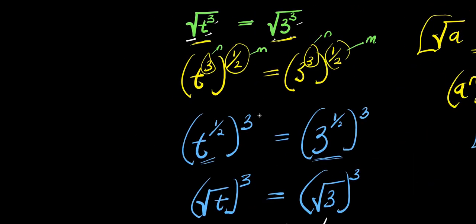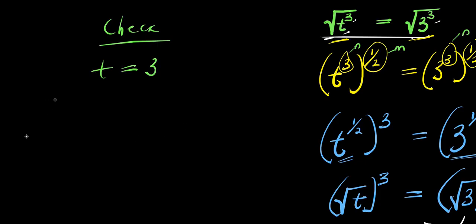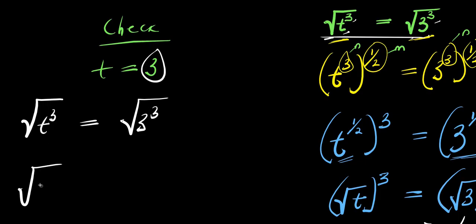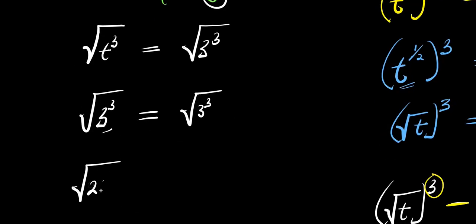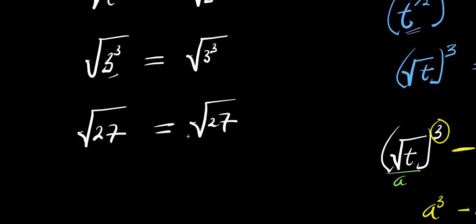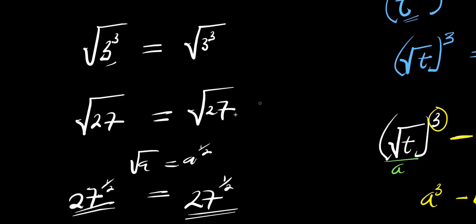Now we check using the real solution t equals three. Substituting into the original equation: square root of three cubed equals square root of three cubed. Three cubed is twenty-seven, so square root of twenty-seven equals square root of twenty-seven. This can also be written as twenty-seven to the power one over two equals twenty-seven to the power one over two. The solution is verified. Thank you and goodbye.